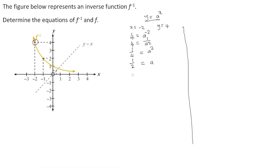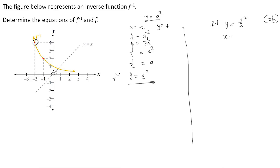Substituting a equals one half back into the standard form, the inverse function is y equals one half to the power of x. To find the original function, we change the x and y values: x equals one half to the power of y. Because we do not use logarithms at level 4, we leave our answer in this form.